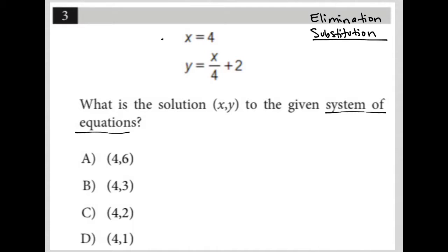That's exactly what we have here. We have x equals 4. So what that allows me to do is say, if it is true that x equals 4, that means that this x in the bottom equation must also be 4. So I'm going to substitute that and rewrite this equation as y equals 4 over 4, or 4 divided by 4 plus 2, which can be simplified into y equals 1 plus 2, and therefore y equals 3.